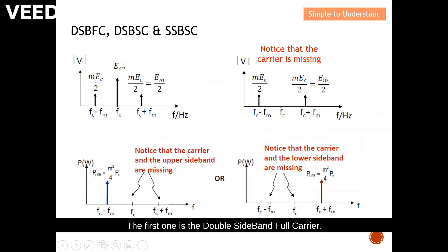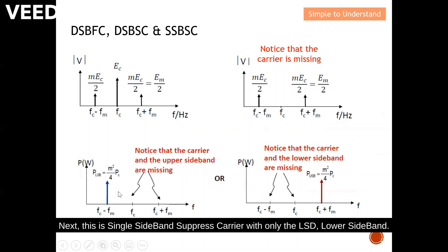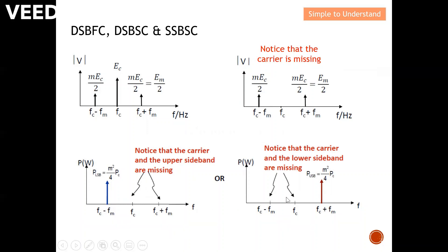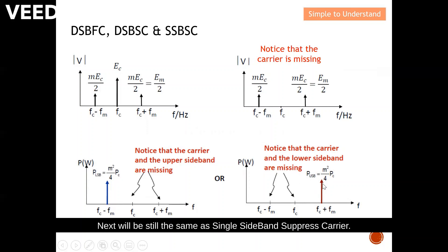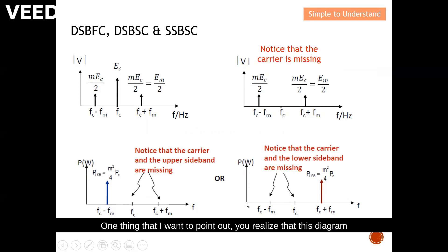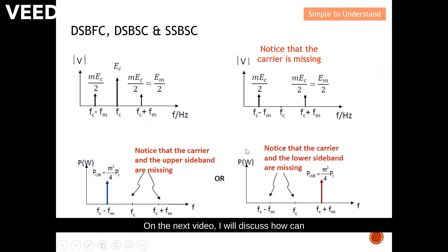To summarize the comparisons: first is DSB-FC; next is DSB-SC, where you realize the carrier is missing; then single sideband suppressed carrier with only the lower sideband — the carrier and upper sideband are missing. In another SSB variant, the lower sideband and carrier are missing. Note that one diagram represents power and the other represents amplitude. On the next video, I will discuss how to represent amplitude modulation in a power spectrum.